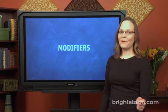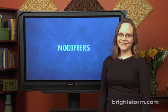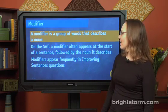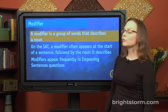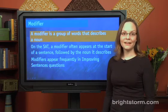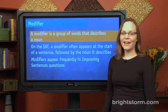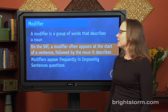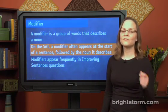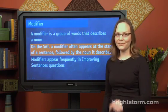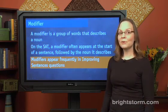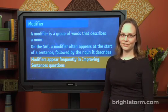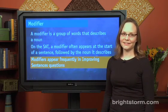Welcome to a lesson on modifiers. Modifiers are just a group of words that describes a noun. When you see modifiers on the SAT, they're going to appear generally at the beginning of a sentence, followed by the noun that they're describing. Most likely you'll find them on the improving sentences questions in the writing section.